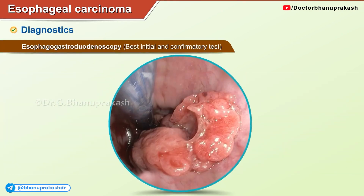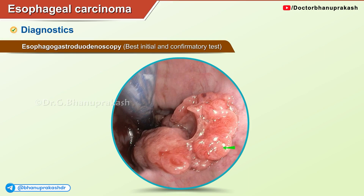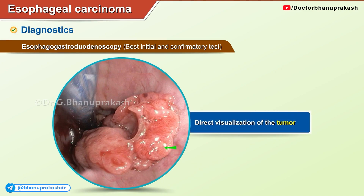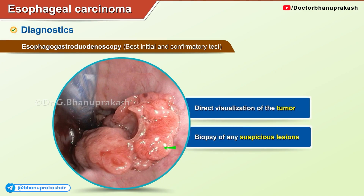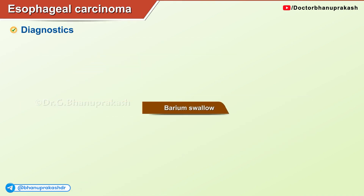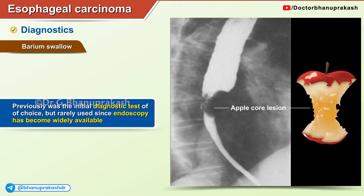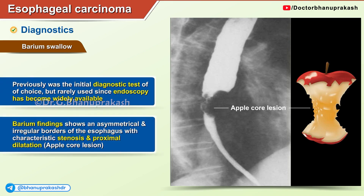Diagnostics: esophagogastroduodenoscopy is the best initial and confirmatory test, allowing direct visualization of the tumor and biopsy of any suspicious lesions. Barium swallow was previously the initial diagnostic test of choice but is rarely used since endoscopy has become widely available. Barium findings show asymmetrical and irregular borders of the esophagus with characteristic stenosis and proximal dilatation, producing an apple core lesion appearance.